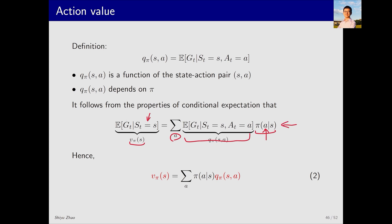This is a property of expectation. In fact, this term is the action value. Therefore the equation above can be written as follows: the left-hand side represents the state value starting from a state; it equals the weighted average of action values obtained by choosing different actions, where the weight is determined by the policy.